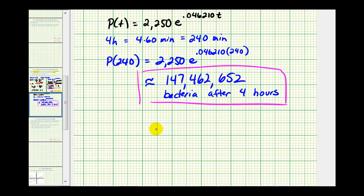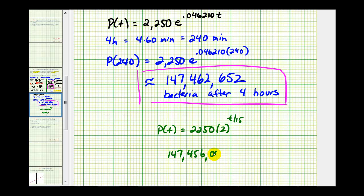I do want to point out that in the previous video, when we used the exponential function p of t equals 2250 times 2 raised to the power of t divided by 15, it actually gave us a different population after four hours — a population of 147,456,000. The reason for the difference is that in this exponential function we had to round the value of k to six decimal places, which does make a difference, especially since this is part of the exponent. So we should be aware that whenever we round there will be an error. In the other video using that exponential function, we didn't have to round, therefore that was the exact population after four hours.